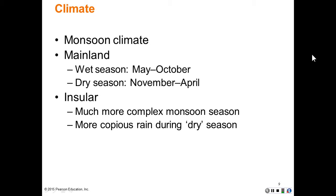The climate here is basically a monsoon climate. The mainland has a more distinct wet and dry season, similar to what we've discussed in South Asia. The summer is the wet season as the intertropical convergence zone brings rain from May through October, and cyclones later in the season create potential environmental disasters. The dry season tends to run from November to April. In insular Southeast Asia, it is a much more complex monsoon season depending upon latitude, but there tends to be more consistent rain during both the wet and dry monsoon seasons.